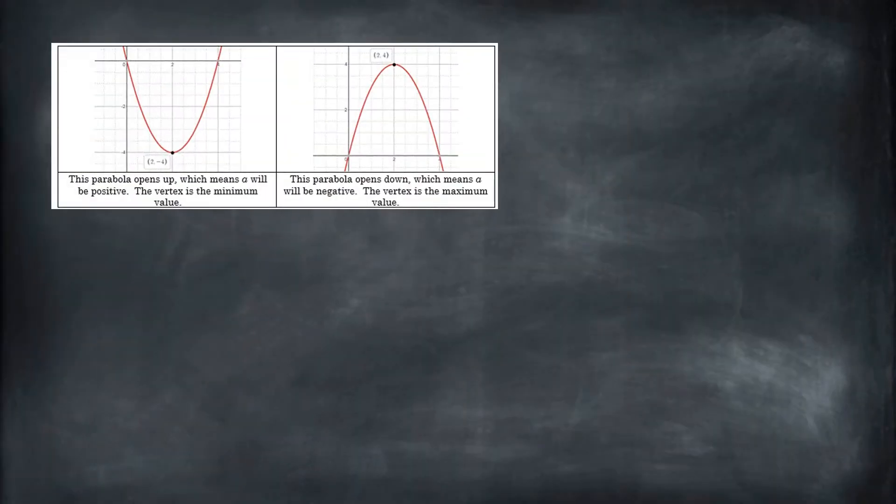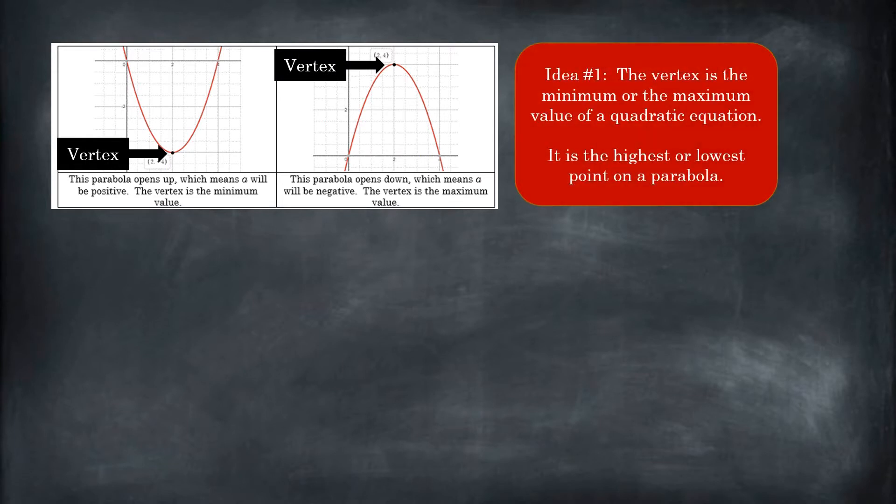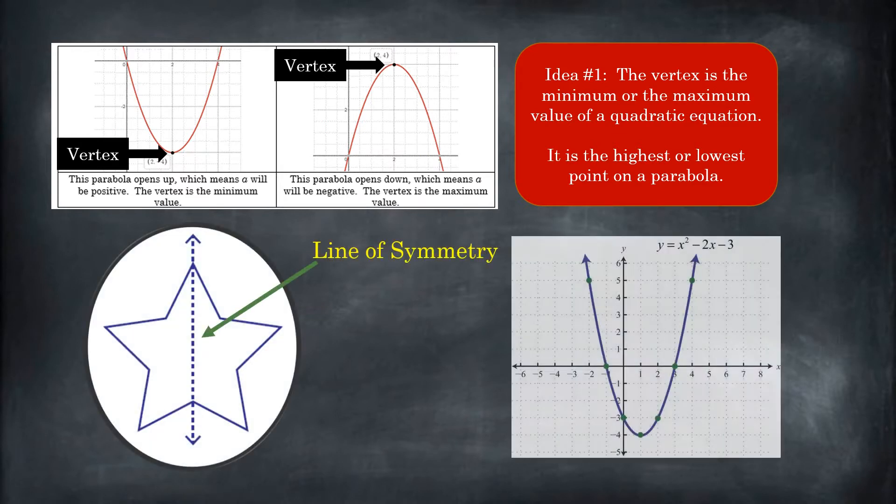Before we begin, let's make sure we're 100% solid. We have some common understanding. It's going to be super important for our exploration. So we're going to talk about the vertex. The vertex is the highest or lowest point on the parabola, the minimum or the maximum. And most importantly for our discussion today, there is a vertical line of symmetry that passes through the vertex.